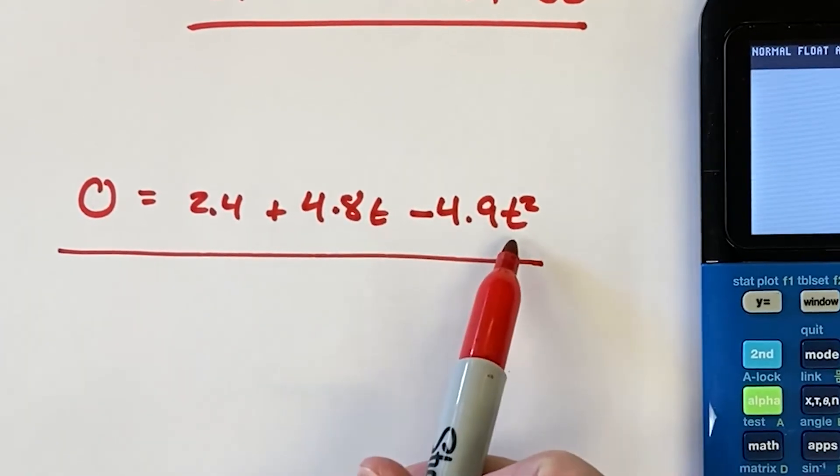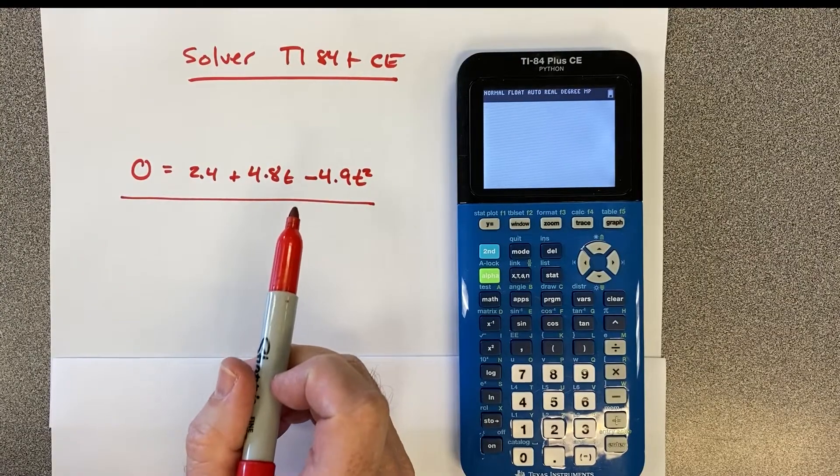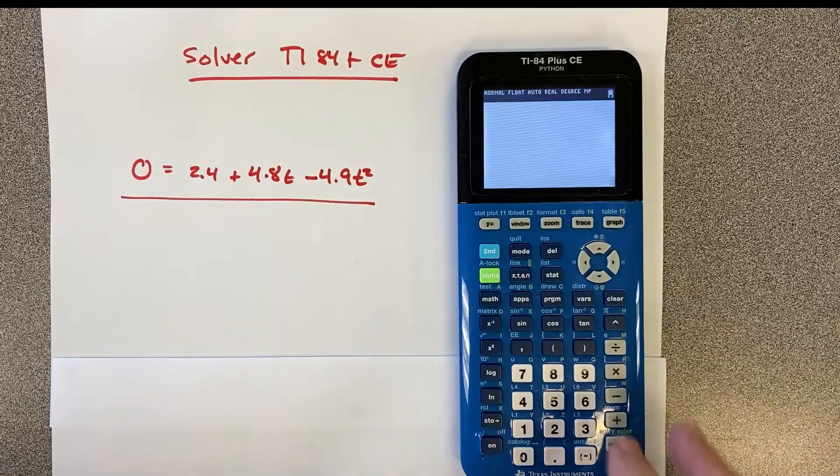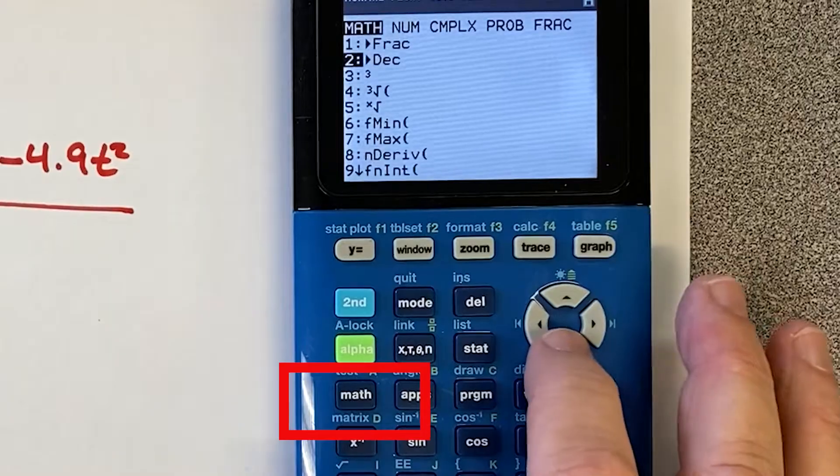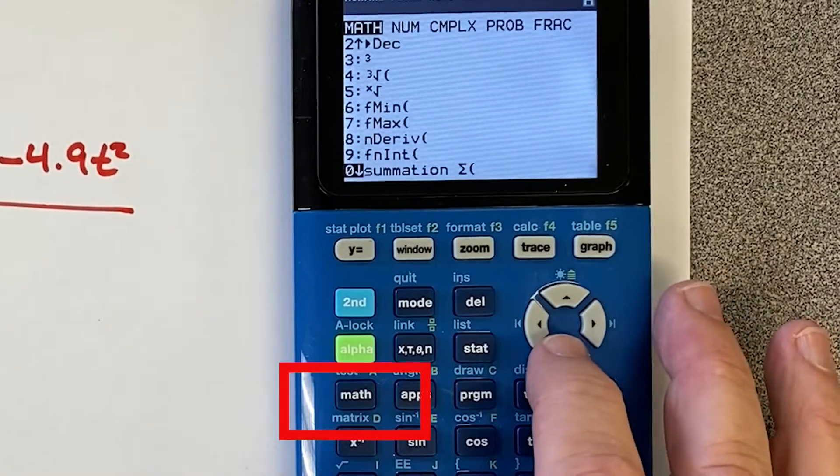This is a quadratic formula problem, and there's a way to do this on the solver that's super easy. So if I go onto my calculator, I click on the math button, and now I go down to number zero.